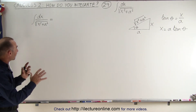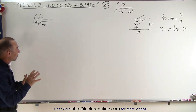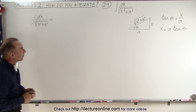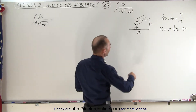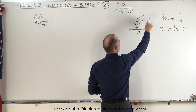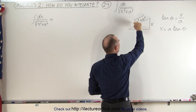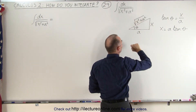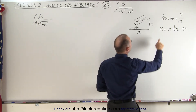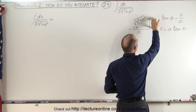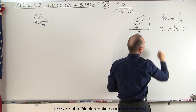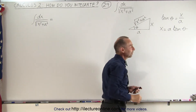First of all, we need to find the relationships and do some trick substitutions here. Notice if we draw a triangle, we call that x, we call this a. The hypotenuse will then be the square root of x squared plus a squared. Here's the angle theta. We can see that the tangent of theta will be equal to the opposite side over the adjacent side, or x will be equal to a times the tangent of theta.